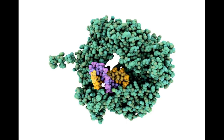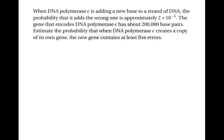Here's an incredible picture of one of these enzymes doing its work — these enzymes are made out of individual atoms and have a particular shape that enables them to function. The DNA molecule is shown in yellow-purple in the middle with the green enzyme wrapped all around it. The enzymes responsible for building DNA are called DNA polymerase. There are various kinds, but this question is about one called DNA polymerase epsilon. It has been found that when DNA polymerase epsilon is adding a new base to a strand of DNA, the probability that it adds the wrong one is approximately 2 times 10 to the power of minus 5.